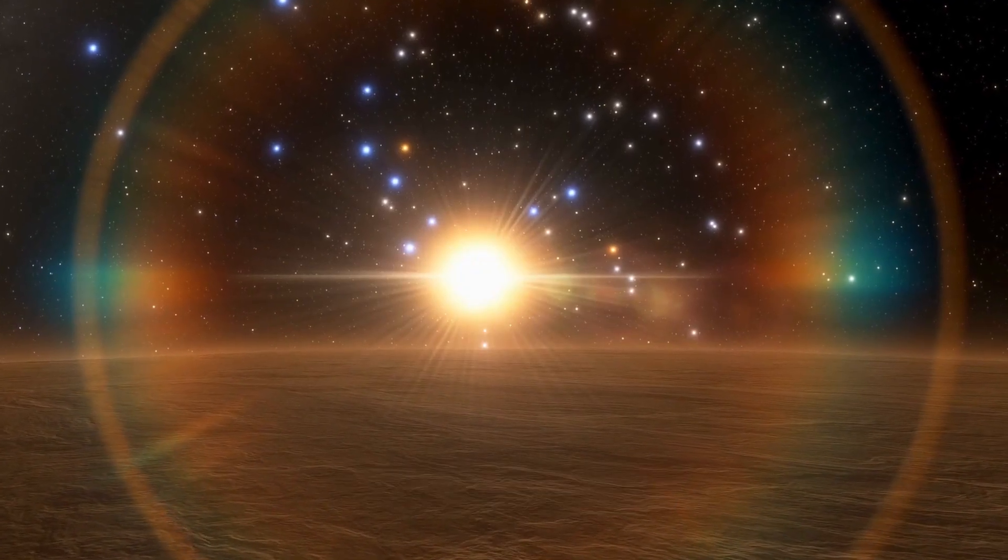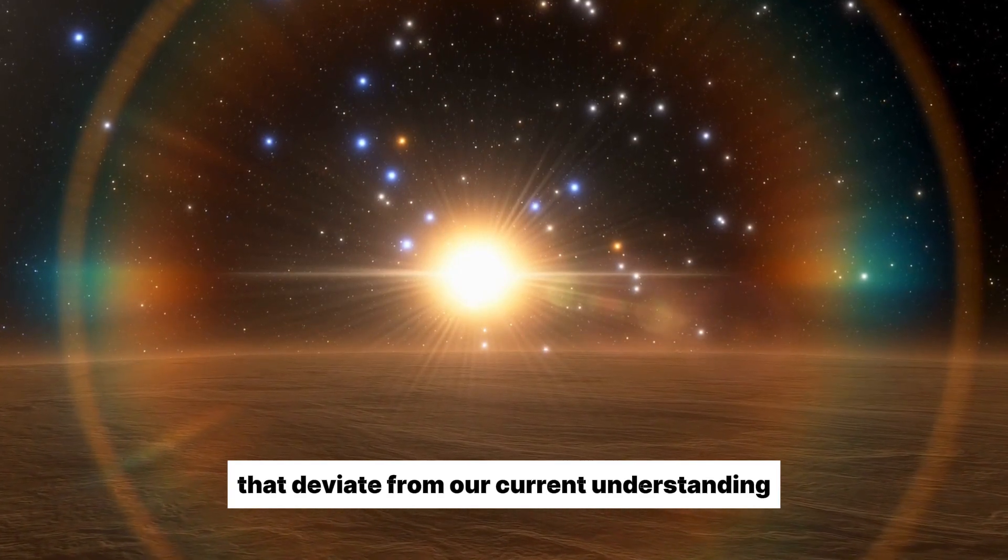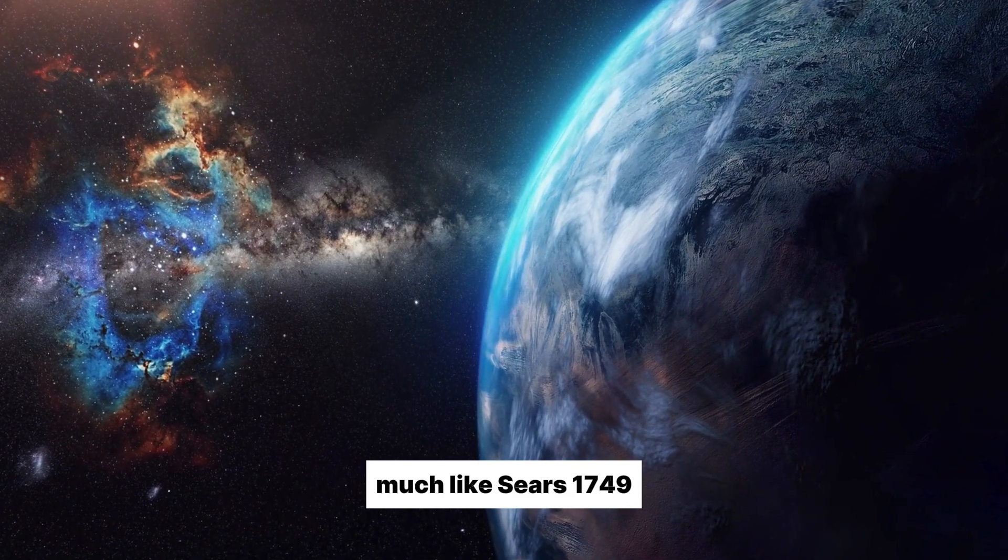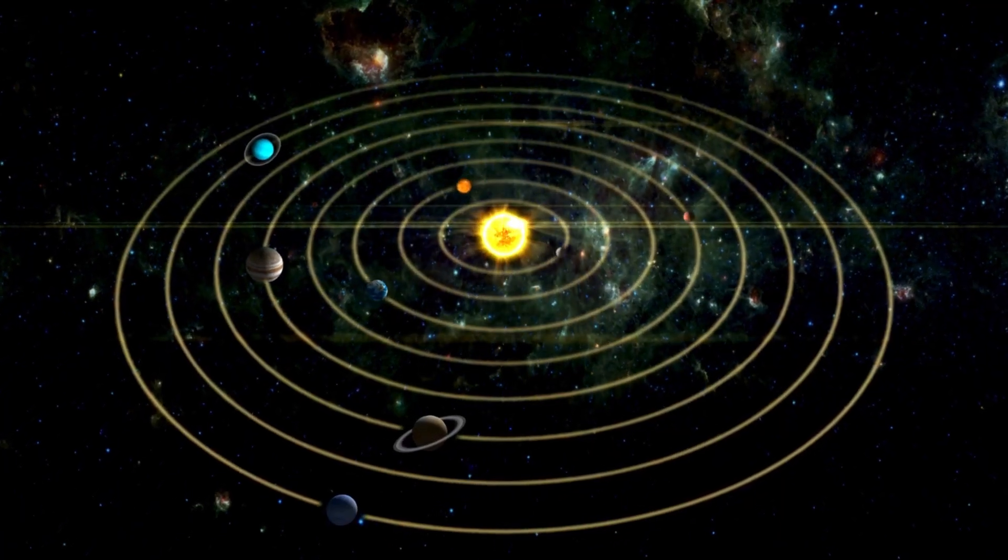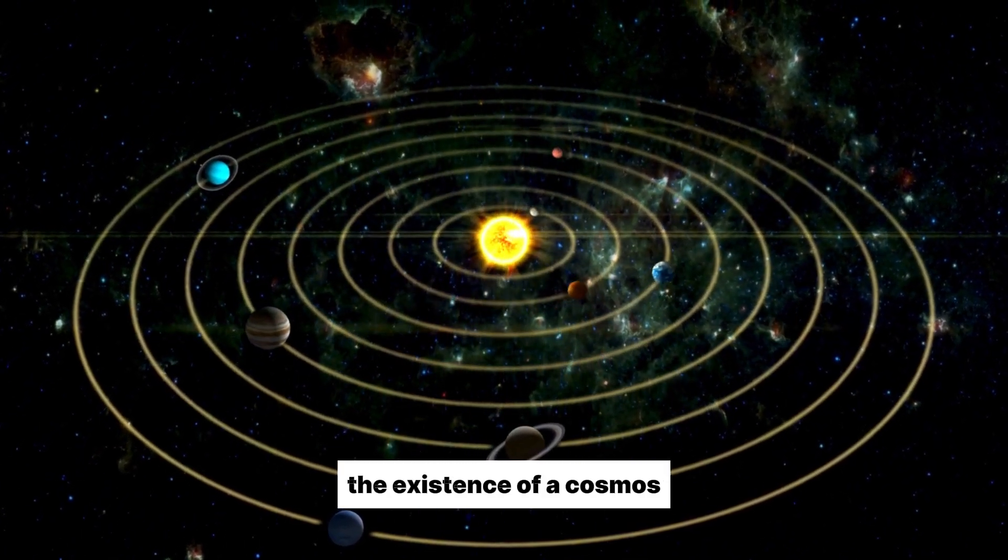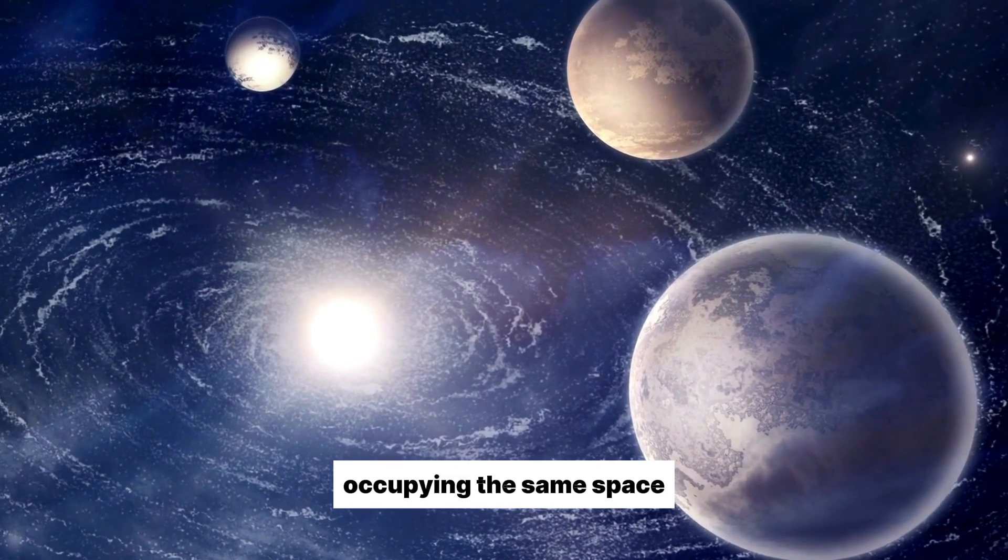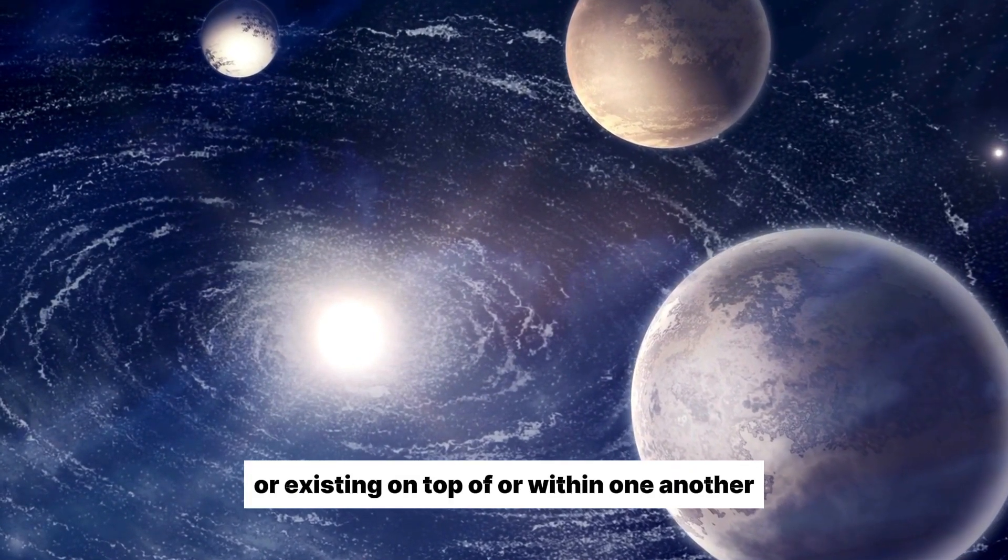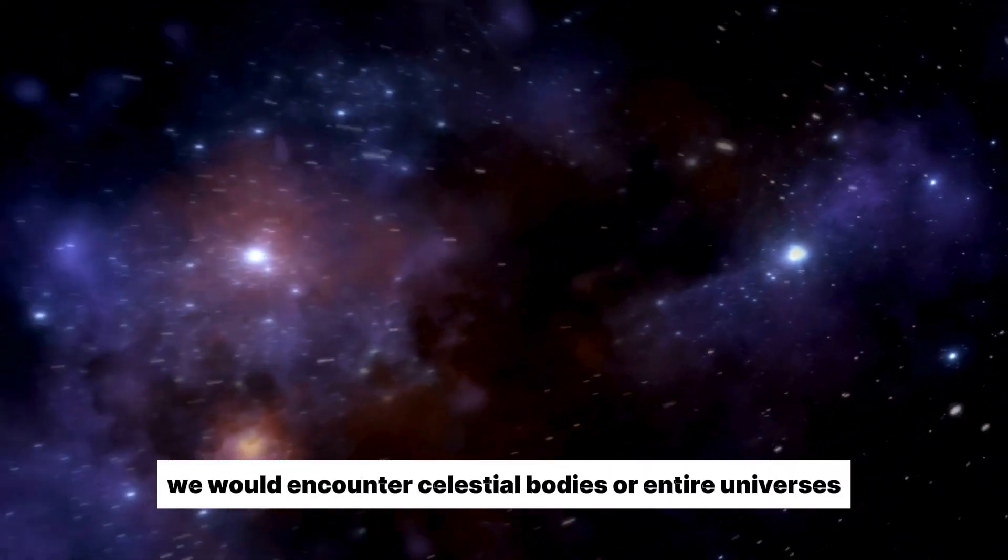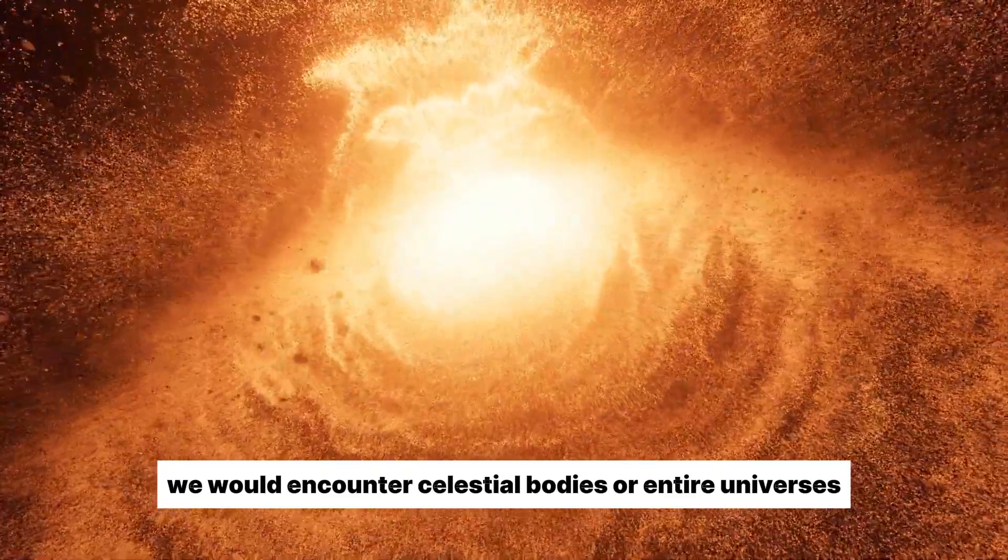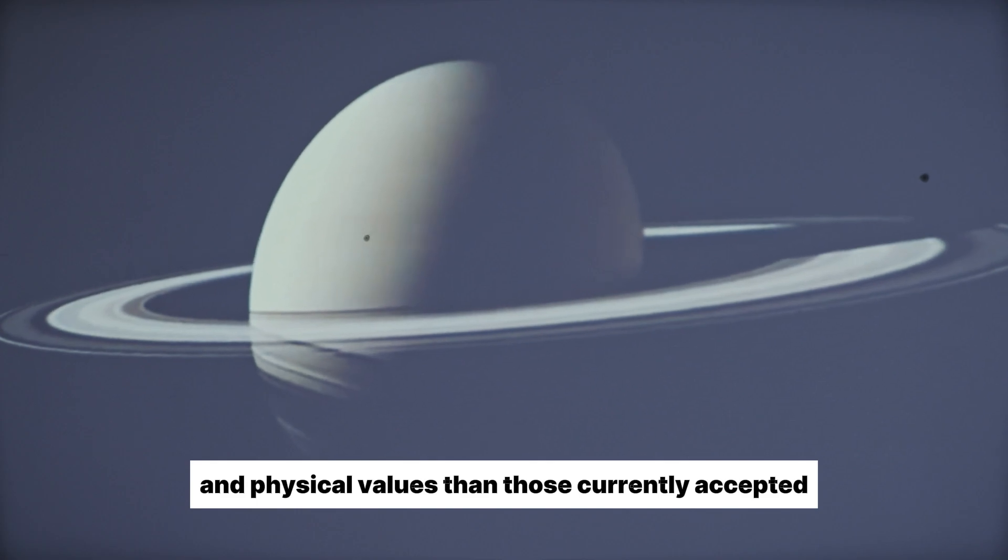If these theories hold true, we should expect to encounter phenomena in the universe that deviate from our current understanding, much like Sierre's 1749 and its younger neighboring galaxies. The multiverse theory suggests the existence of a cosmos, where many universes coexist in parallel, occupying the same space or existing on top of or within one another. In such a scenario, we would encounter celestial bodies or entire universes that follow entirely different rules and physical values than those currently accepted.